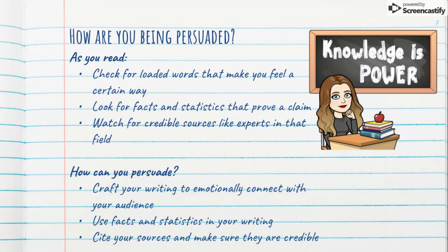So how are you being persuaded? As you read your articles, check for loaded words that make you feel a certain way. Certain words have certain connotations — if I call you skinny or thin, it doesn't sting quite the way it does if I called you scrawny. Look for those word choice moments where an author is picking a certain word because it has a trigger to it. Also look for facts and statistics that prove a claim — where did that research come from? Is it credible? Is this really proving their point?